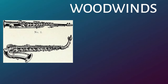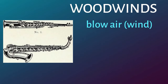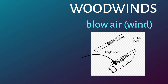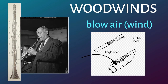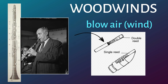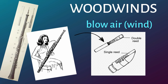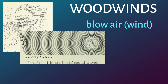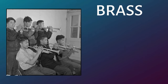The woodwinds produce sound by simply blowing air, or wind, into their instruments. Sometimes the air is used to vibrate a single reed, as with the clarinet, or a double reed, as with the oboe and bassoon. The air itself may even be used to vibrate and cause sound, as the flute does.